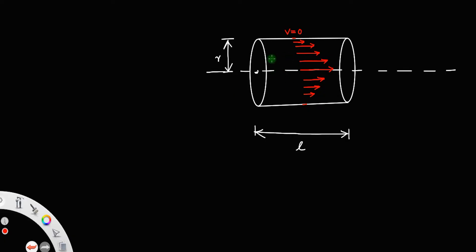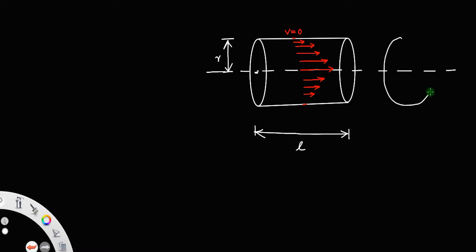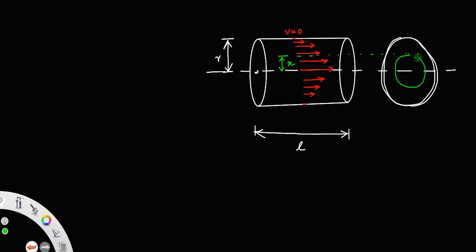We need to find the velocity at a particular point at a particular distance from the axis of the cylinder. For that, let us consider the cross section of the cylinder — it is a circle. Suppose we take a point, or a surface, at distance x from the axis of the cylinder. If you look through this face, it will be a circle of radius x.